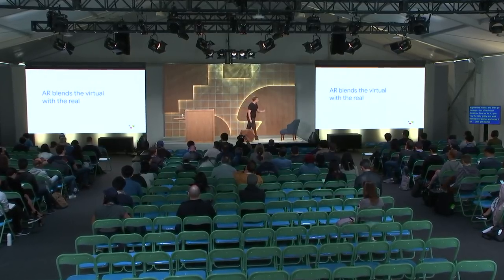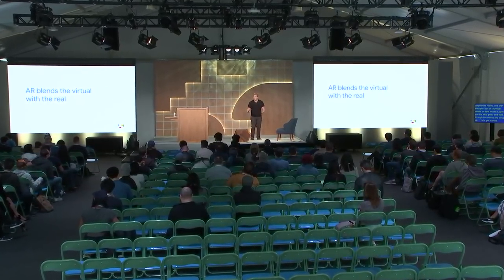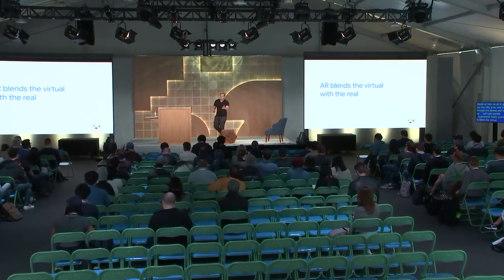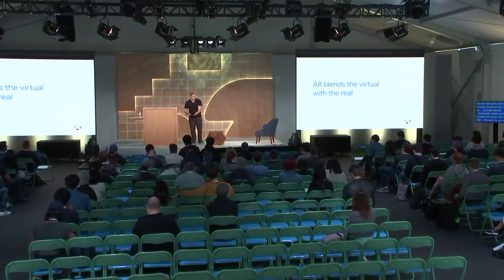Augmented reality has always promised to blend the virtual with the real. What we really want is for our virtual character to actually look like it's in our living room, to look like it's interacting with the environment, to look like it's in broad daylight sunshine, and for all of that to blend with the environment in a natural, seamless way. This happens by taking advantage of cues we see in the environment.